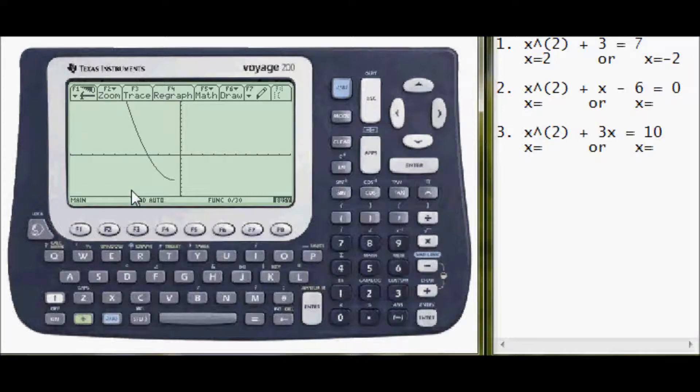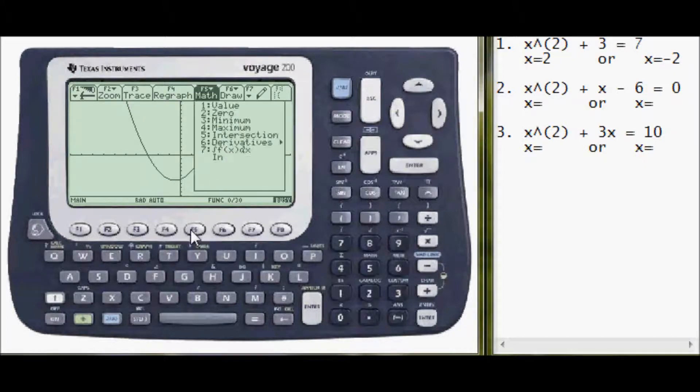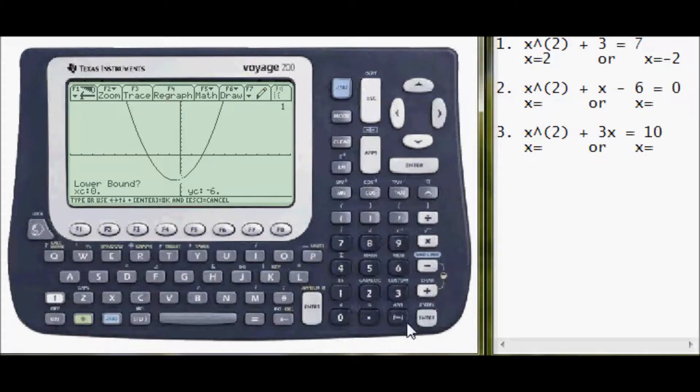And this time we're going to be using the 0 function to find the roots of the equation. Okay, so now press F5 again. And 0 is number 2. So lower bound, upper bound, I want to be on the right side of this 0 right here. So 1, 2, 3. Enter. And it turns out to be 2.